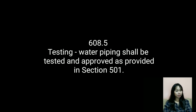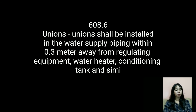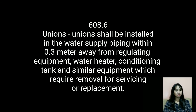Section 608.5: Water piping shall be tested and approved as provided in Section 501. Section 608.6 — Unions: Unions shall be installed in water supply piping within 0.3 meter of regulating equipment, water heaters, conditioning tanks, and similar equipment which requires removal for servicing or replacement.